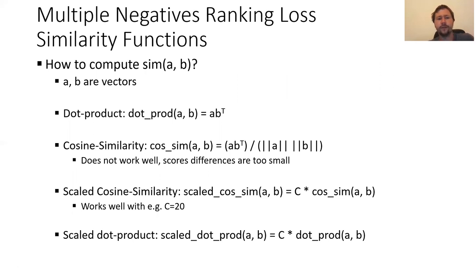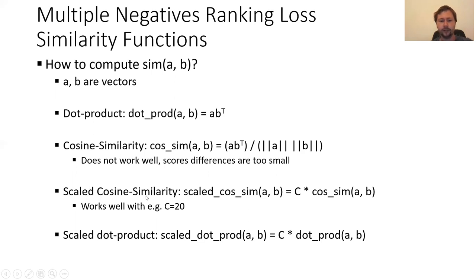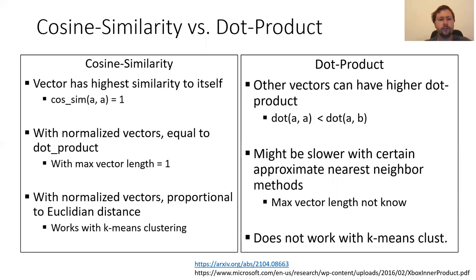There are different options for the similarity function. The dot product computes the raw dot product between vectors a and b. Cosine similarity first normalizes the vectors to size one and then computes the dot product. Cosine similarity doesn't work so well by itself because the score difference is too small, so you use a scaled cosine similarity — multiply by a constant factor, for example 20 works quite well. You can also scale dot product, but it's not necessary.